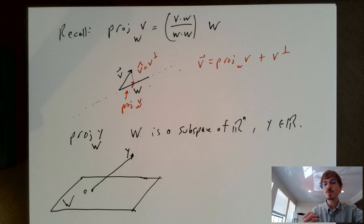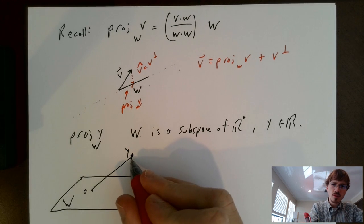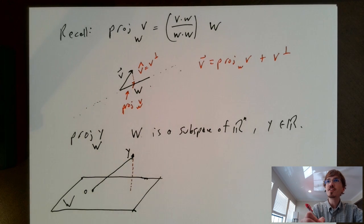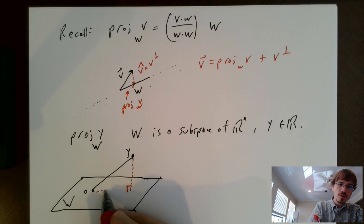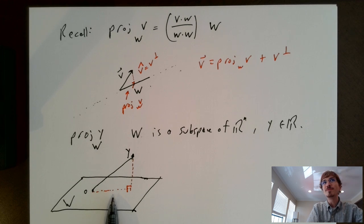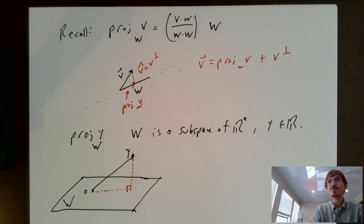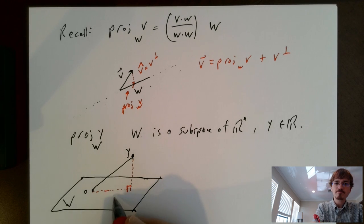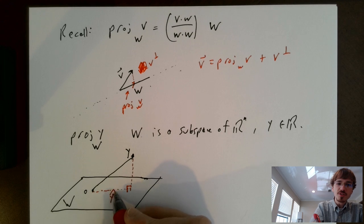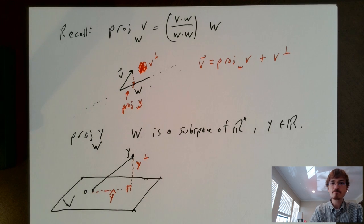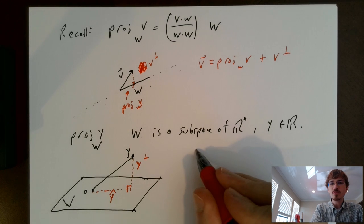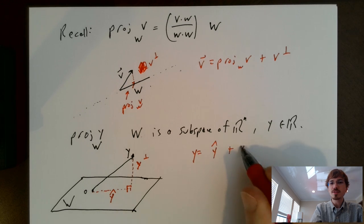How do I orthogonally project? Visually, I need to find a vector such that whenever we shine the shadow of y down into the subspace W, we form a right angle. The shadow cast by shining a light above y onto the subspace W is our projection vector. Let's call this y-hat. And this will be y-perp, the perpendicular component of y. And how can we decompose y? y equals y-hat plus the perpendicular component.